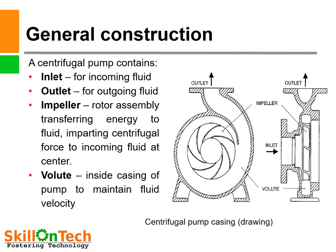General construction of a centrifugal pump. Two pictures are given of a volute casing and impeller. Here you can see what a centrifugal pump contains. This is the inlet of a centrifugal pump and this is the discharge, which is called the outlet nozzle for outgoing of the fluid. Here you can see an impeller is shown, and these are the backward curved vanes mounted on the impeller.